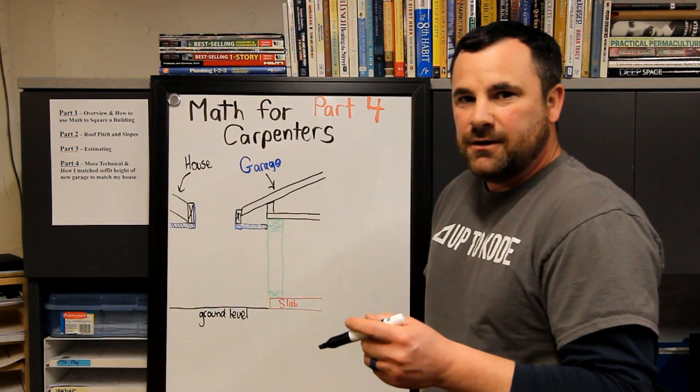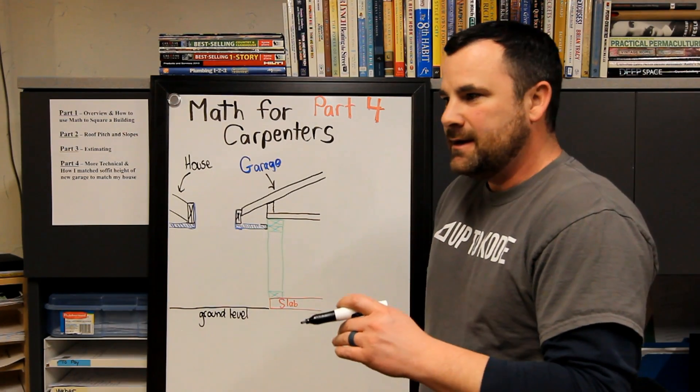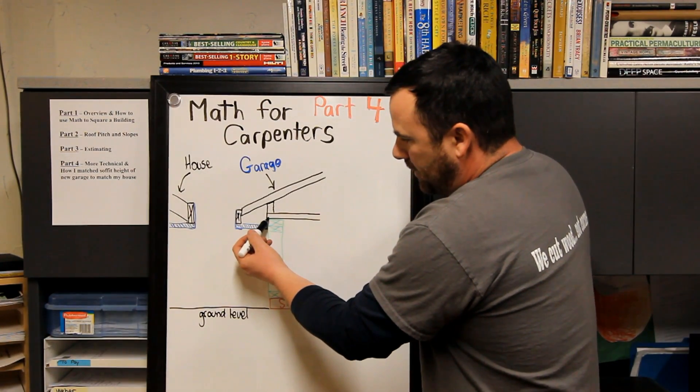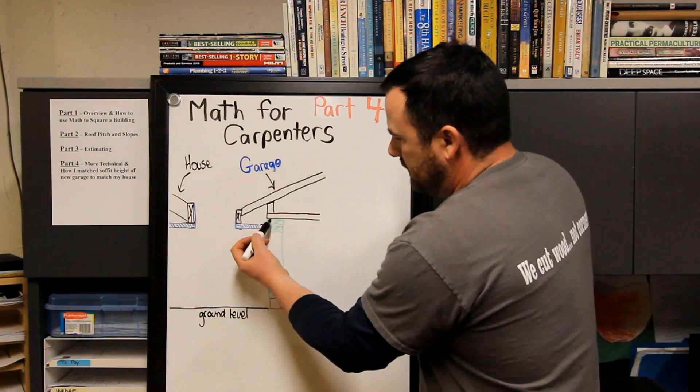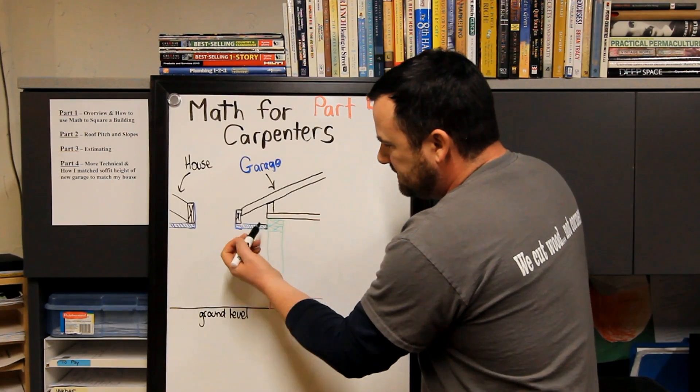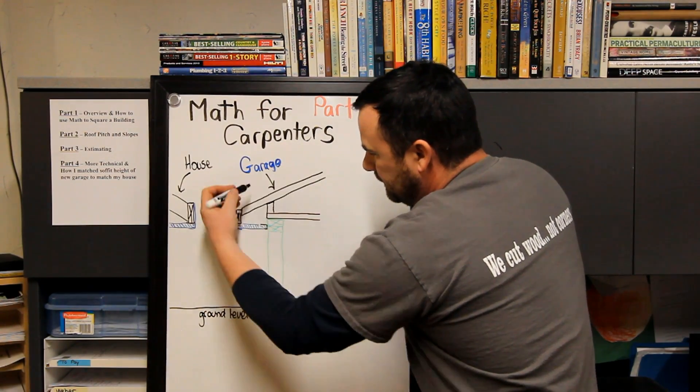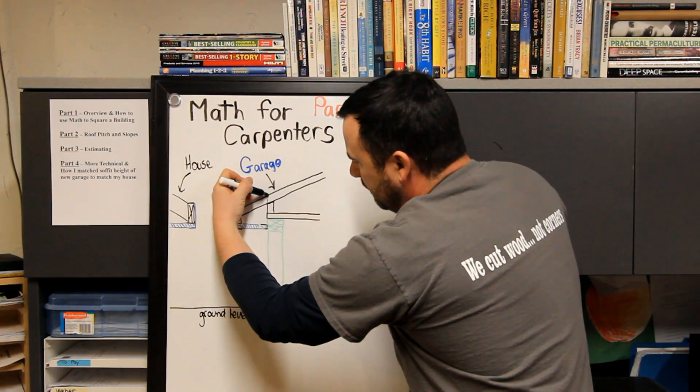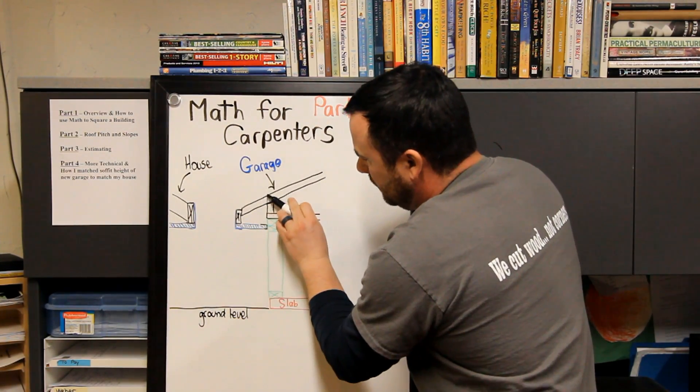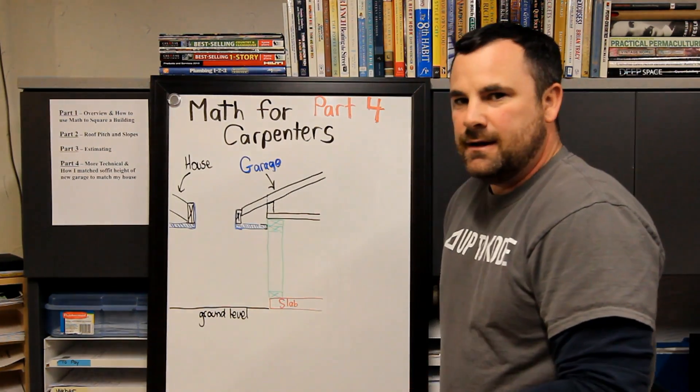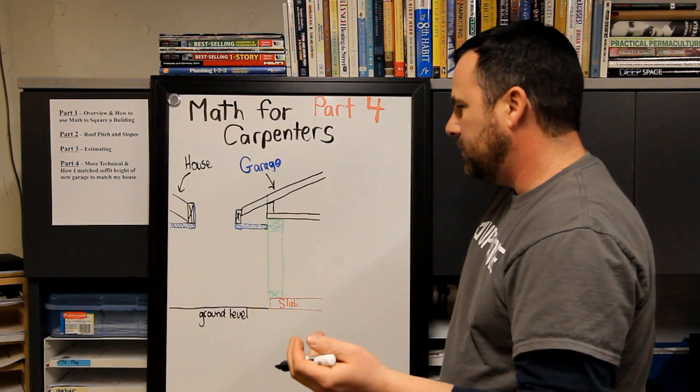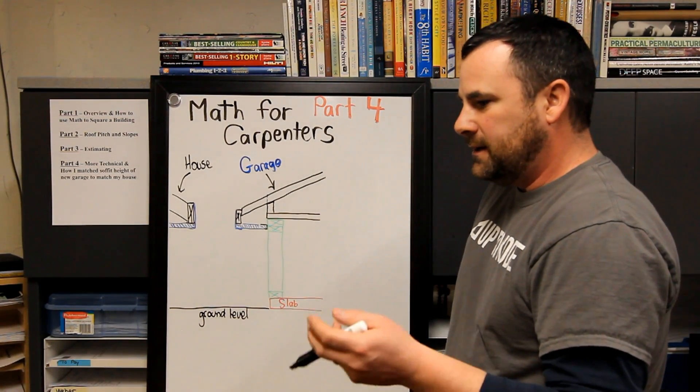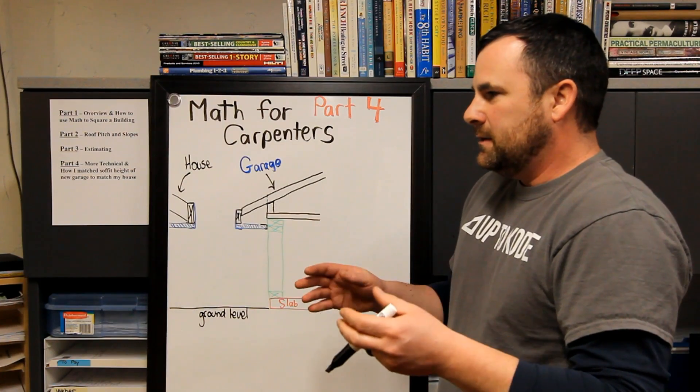Probably one of the most crucial things you need to know, if you're doing an addition or anything, is your heel height. That's the height from the top of the wall, or the bottom of your truss, to where the heel is at the end of it. If you draw a vertical line up, the measurement from this point to there is your heel height. In school they called it the wood above plate.